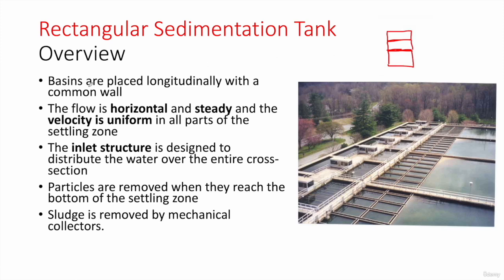These basins are placed longitudinally with a common wall. The flow is horizontal — a steady, uniform flow with minimal disturbance. Our aim is to have laminar flow throughout the settling zone. We have an inlet structure to distribute the water over the entire cross section. Particles are removed when they reach the bottom, the sludge is removed by rotating mechanical scrapers, and the clean water is collected through launders.